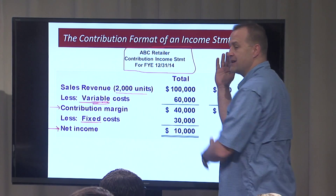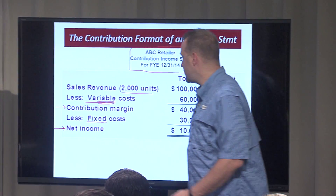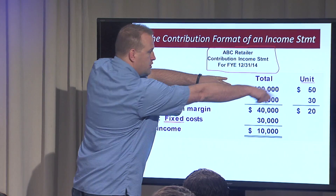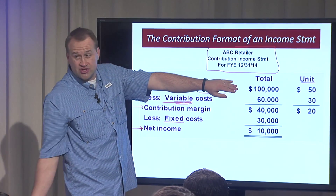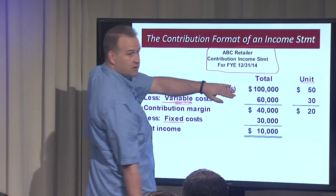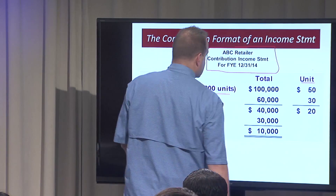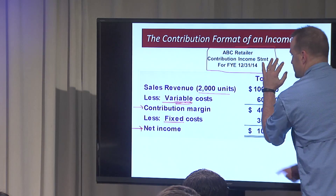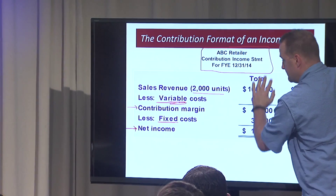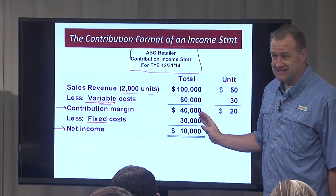Sometimes I will give totals and per units but not units sold — you can compute units sold by dividing any total by the per unit figure: one hundred thousand divided by fifty equals two thousand units. I want you to understand that if you have two of these values, you can compute the third. This is the contribution income statement at a level of two thousand units, and the per unit amounts and relationships between columns are always something you can work across.